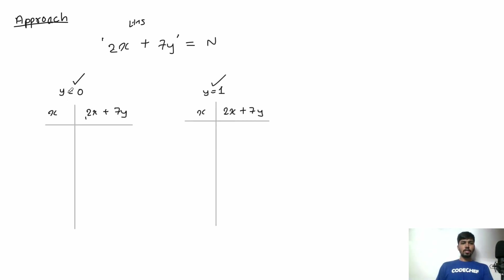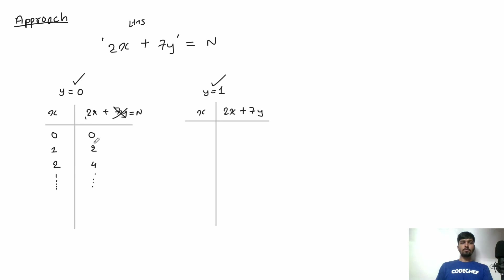Now let's analyze the solution. If we keep y = 0, the 7y term disappears and the equation becomes n = 2x. For x = 0 we get 0, for x = 1 we get 2, for x = 2 we get 4, and so on. So with y = 0 we can get all even numbers greater than or equal to 0.